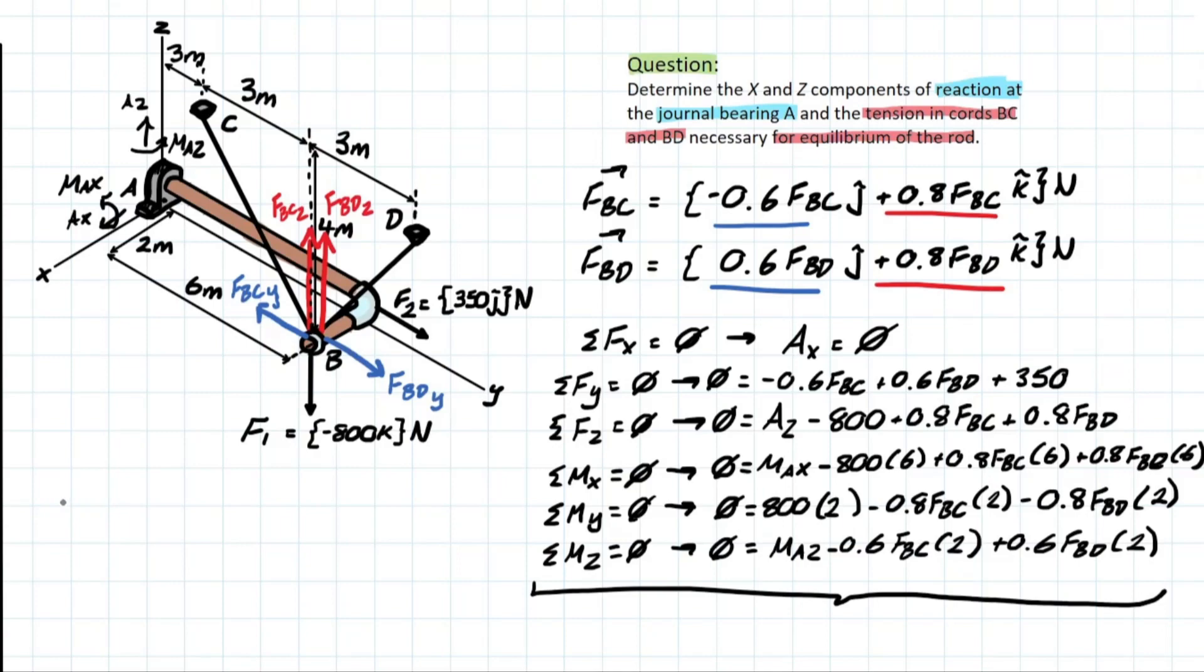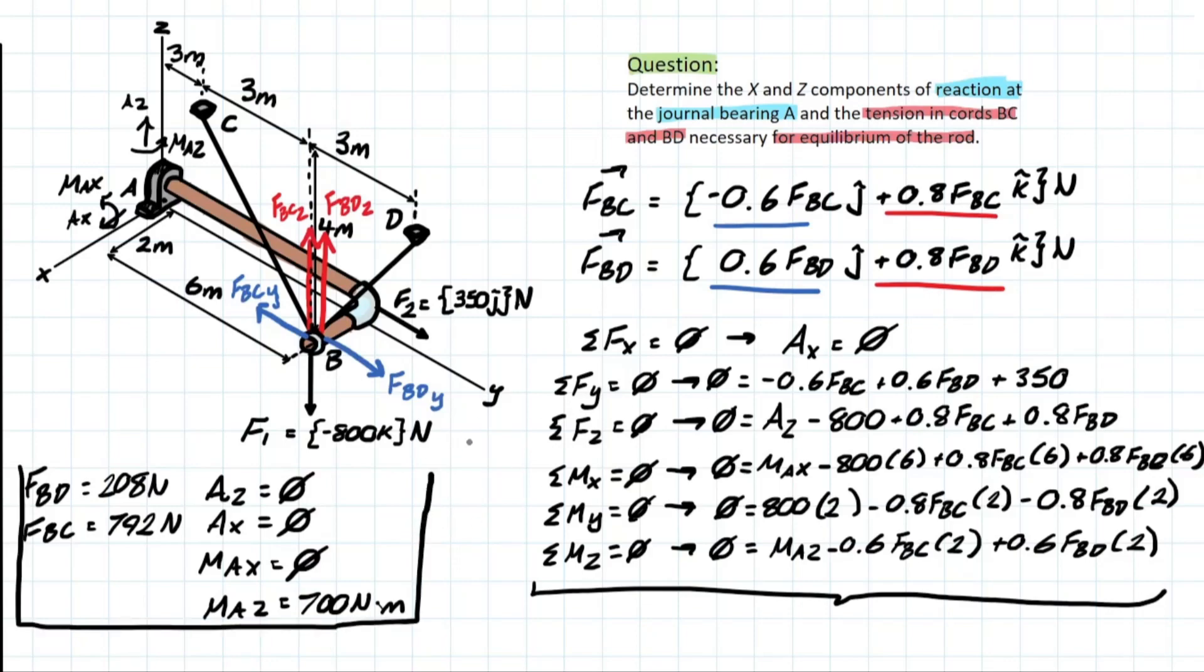So this leaves us with our final answers: FBD is 208 N, FBC is going to be 792 N, Az equal to 0, we recall Ax is equal to 0, Max will equal 0 as well, and then Maz is 700 N per meter. Alright, that's your final answer. I hope the concept of solving these types of problems helped you guys to recall vectors a little bit better and to be prepared for a thinking problem kind of like this. I hope this helped.